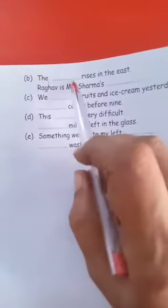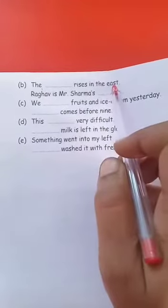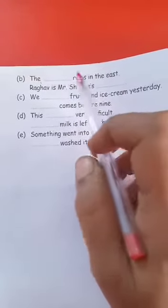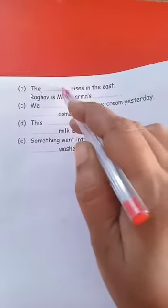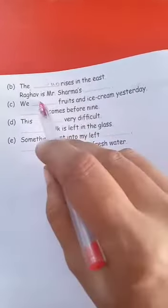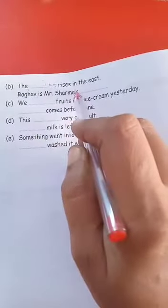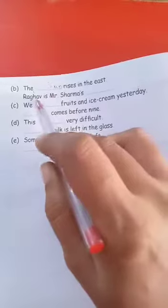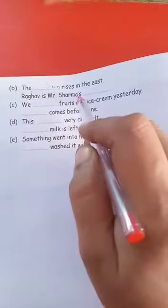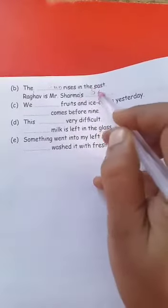Next: 'The dash rises in the east.' Sabka bol sakta hai — the sun. Spelling ke liye likho S-U-N. And 'Rekhav is Mr. Shamaas's son' — S-O-N. So 'sun' and 'son' are homophones with different spellings and meanings.